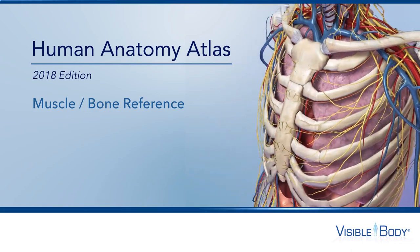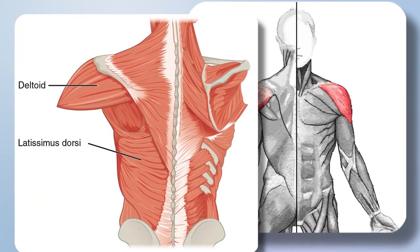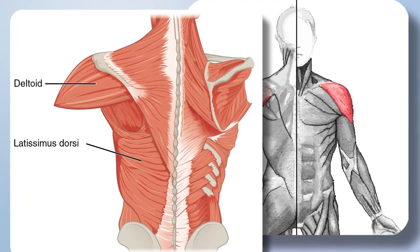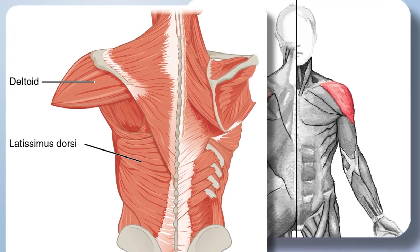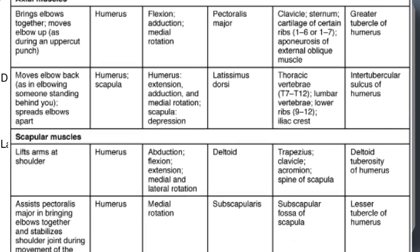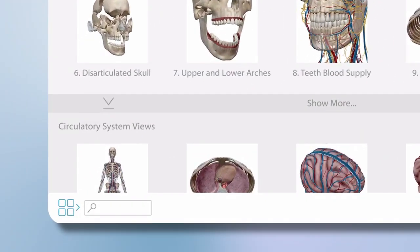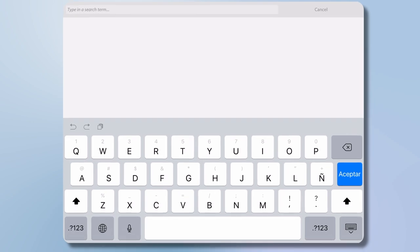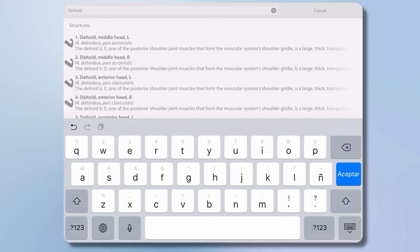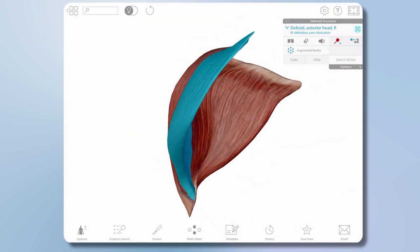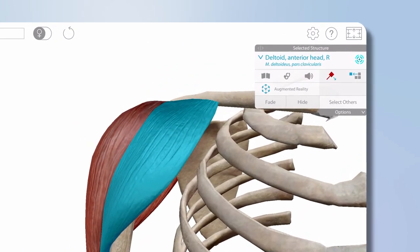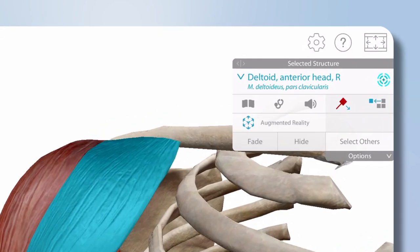In a traditional textbook experience, you might learn the deltoid muscle by viewing images and studying tables that describe details. In Human Anatomy Atlas, search for the deltoid, select a view, and get started. In the content box are details about the muscle.